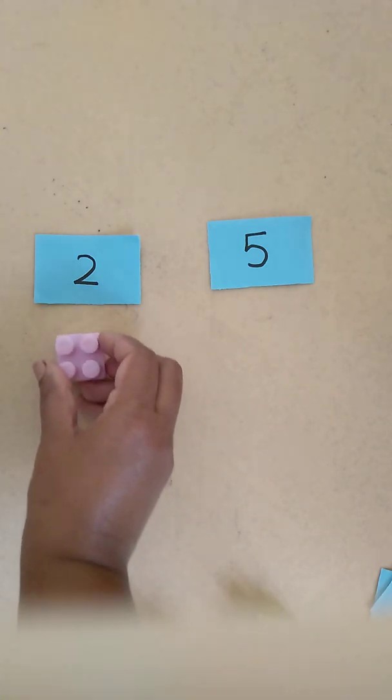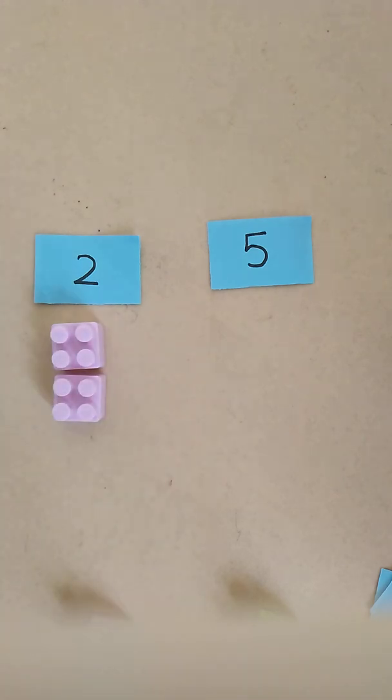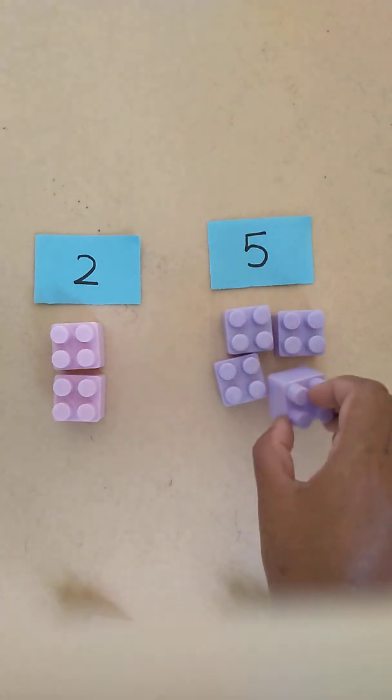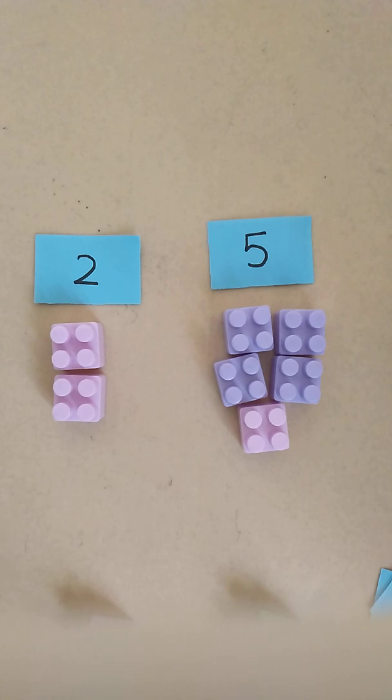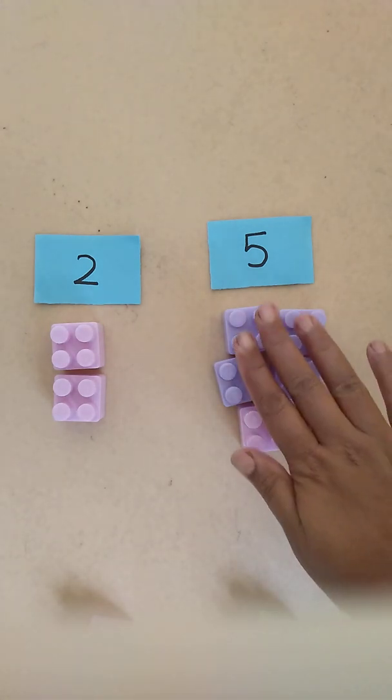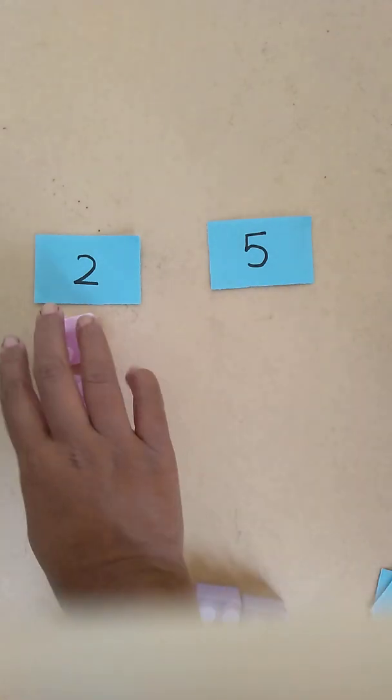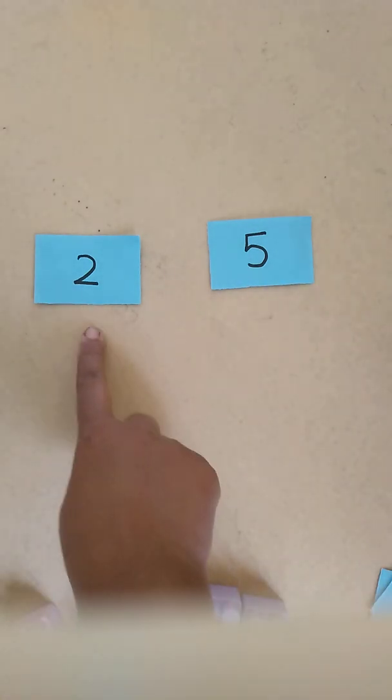Shall we count 2 puzzle pieces? Now count as I keep: 1, 2. Shall we keep 5 puzzle pieces now? 1, 2, 3, 4, and 5. Now which number is bigger, 2 or 5? Yes, 5, because it has more pieces of puzzles. Now shall we remove the puzzle pieces? Now which number is bigger, 2 or 5? 5 is bigger than 2.